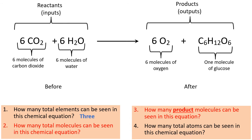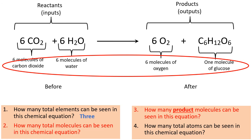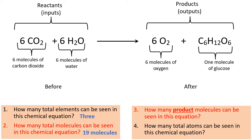So now I'm hoping you can answer questions two and three. For question number two, how many total molecules can be seen in this equation? Just add them up right there. Add up the six plus the six plus the six plus the one. And you come to 19 molecules. For question number three, if we're just looking at the product molecules, add up the six molecules of oxygen plus the one molecule of glucose. And you have an answer of seven molecules.